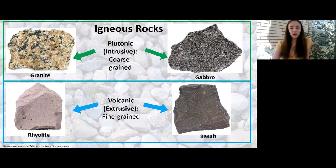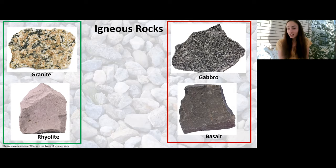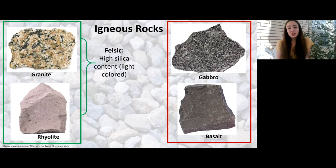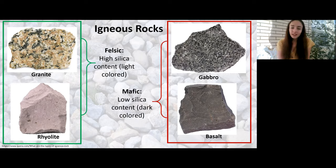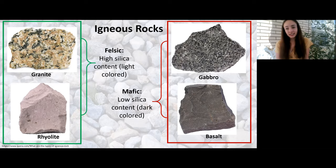Another way we distinguish igneous rocks is by their color — but what this really reflects is silica content. The rocks on the left are very light in color and we term these felsic because they have really high silica content, whereas the rocks on the right are dark in color due to low silica content, and we term these mafic. This is a fundamental way to classify igneous rocks — felsic, mafic, or in between, which we call intermediate. There is also a term called ultramafic, which indicates even lower silica content.